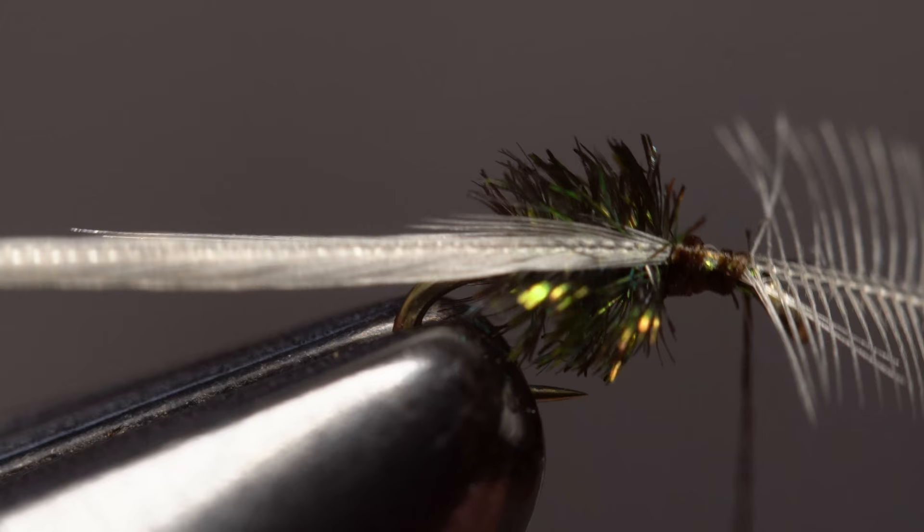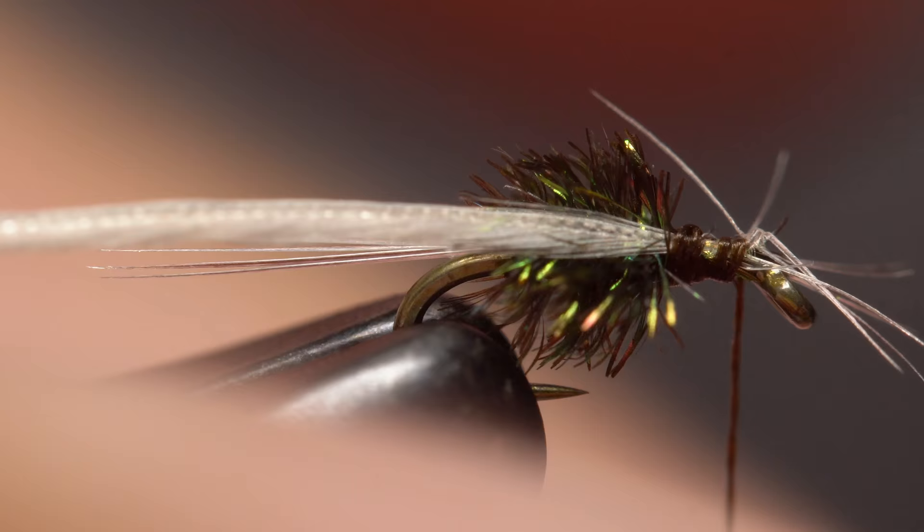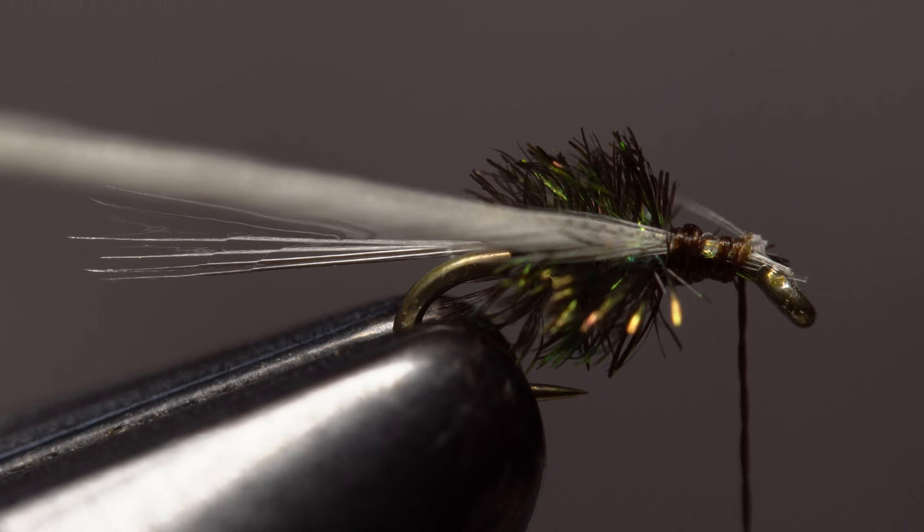Keep taking wraps of tying thread forward to make sure there's no way the feather will pull free. Then lift the butt end of the feather up and back to snip it off close. If there are any stray fibers, make sure to snip them out now. With flies this small, even a mildly blocked hook eye can render them unusable.